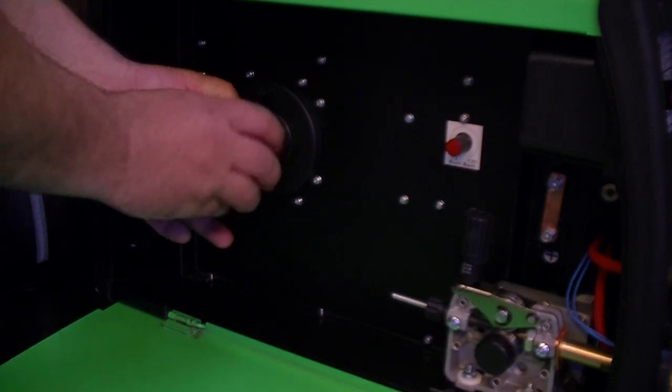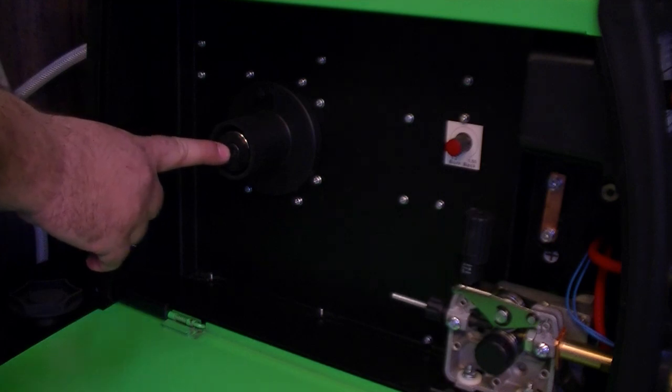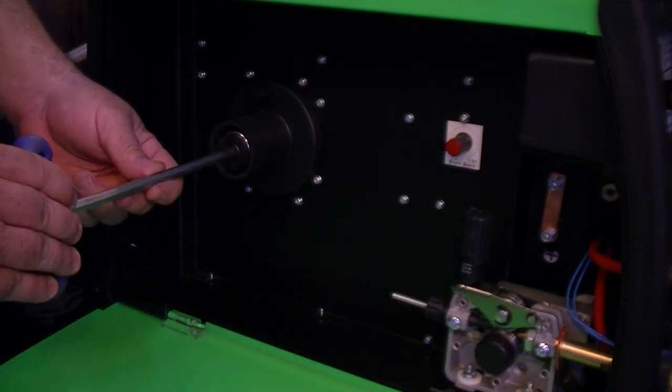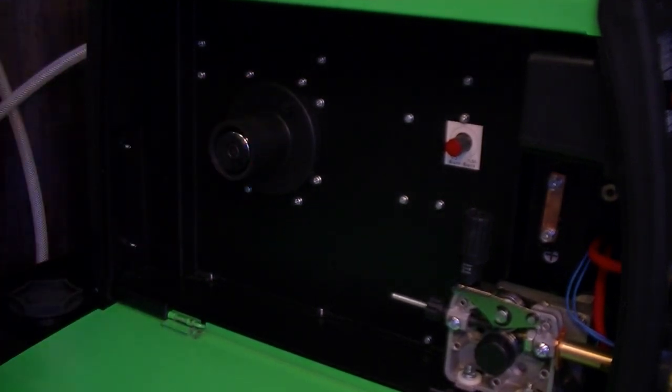Unscrew the hand nut from the spool carrier by turning counterclockwise. Now adjust the tension on the spool carrier with a socket head wrench. Some resistance is desirable to prevent de-spooling of the MIG wire.